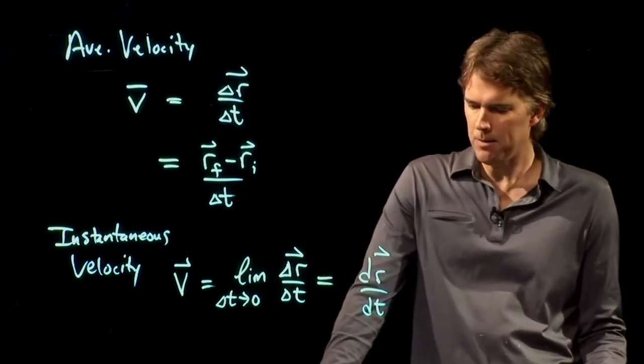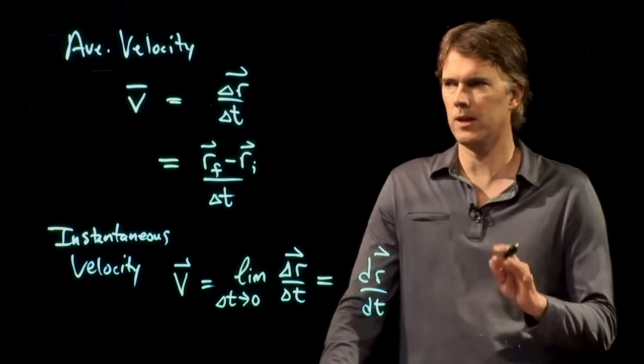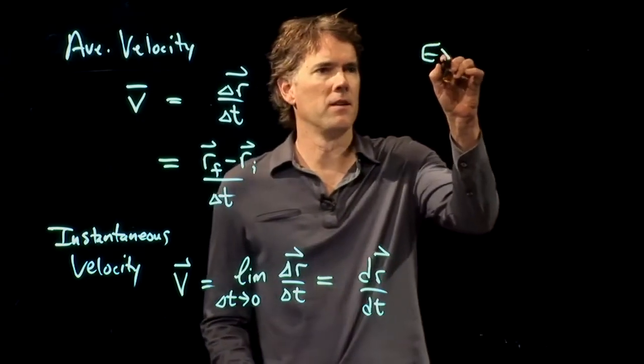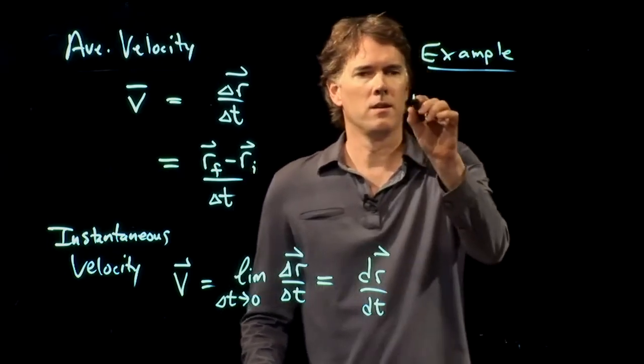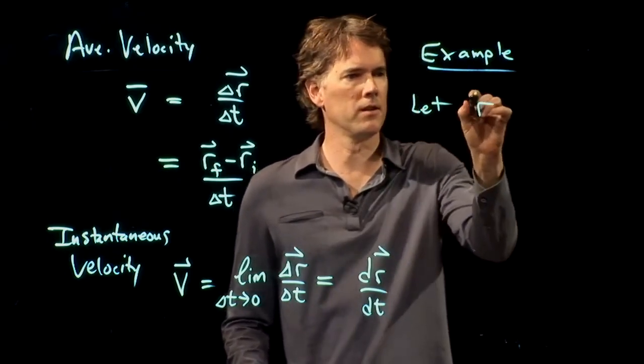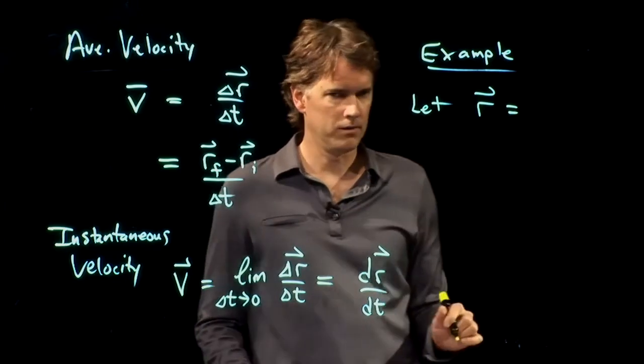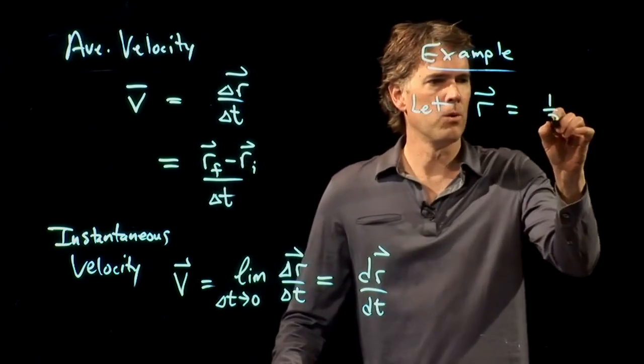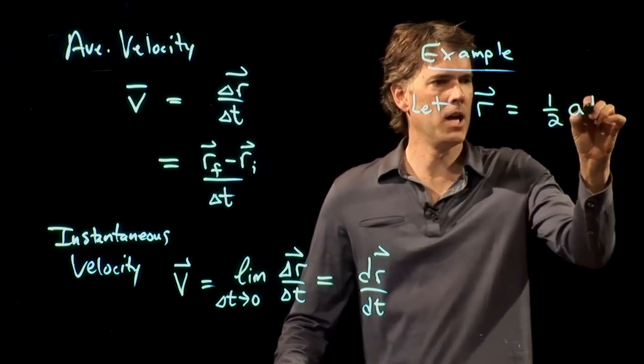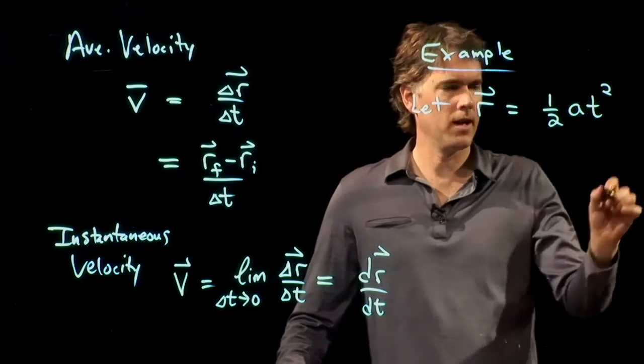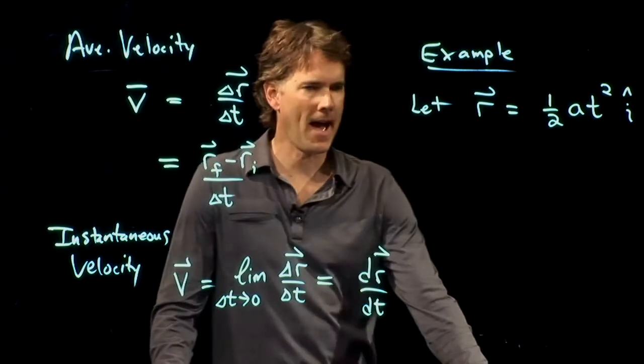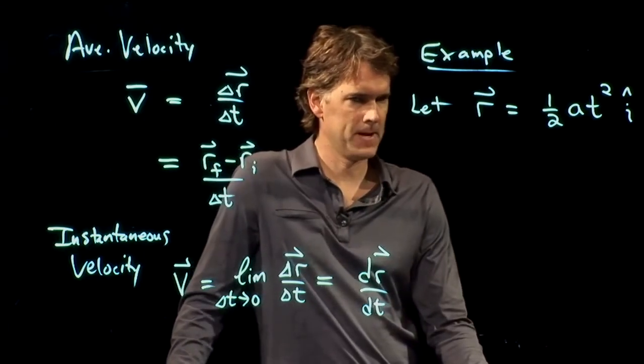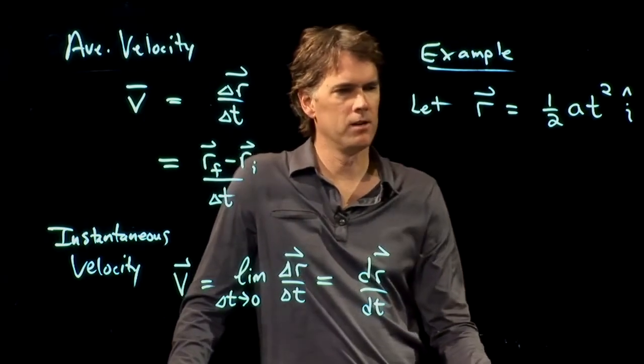All right, maybe we should try an example of that. Let's say that we have the following. Let's give it R is equal to one-half At squared, and we are moving in one dimension, I hat. Okay, what is V?